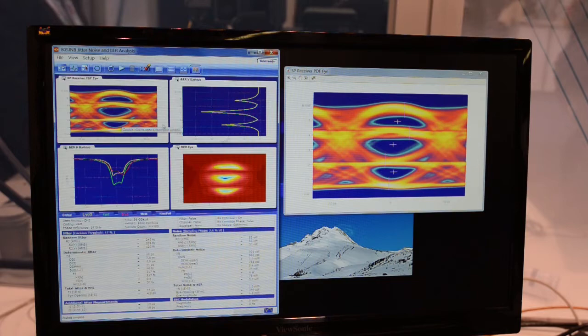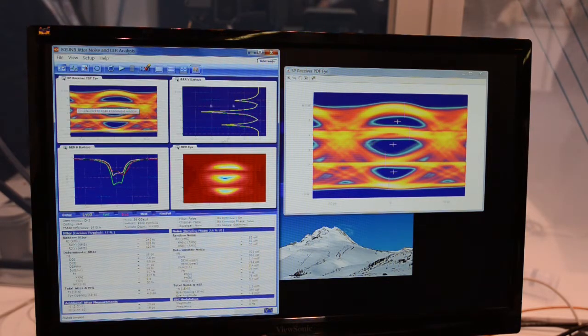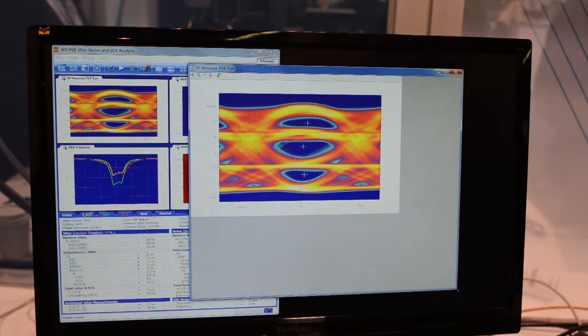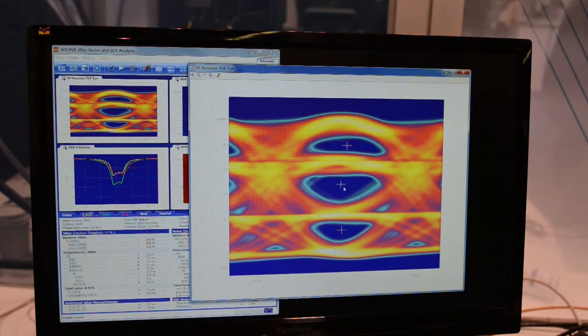So I can select PAM-2 and RZ or PAM-4. So here, obviously, I'm selecting PAM-4. I'm analyzing the signal. I have detailed eye diagrams where actually the software is smart enough to find the optimal timing and threshold point.